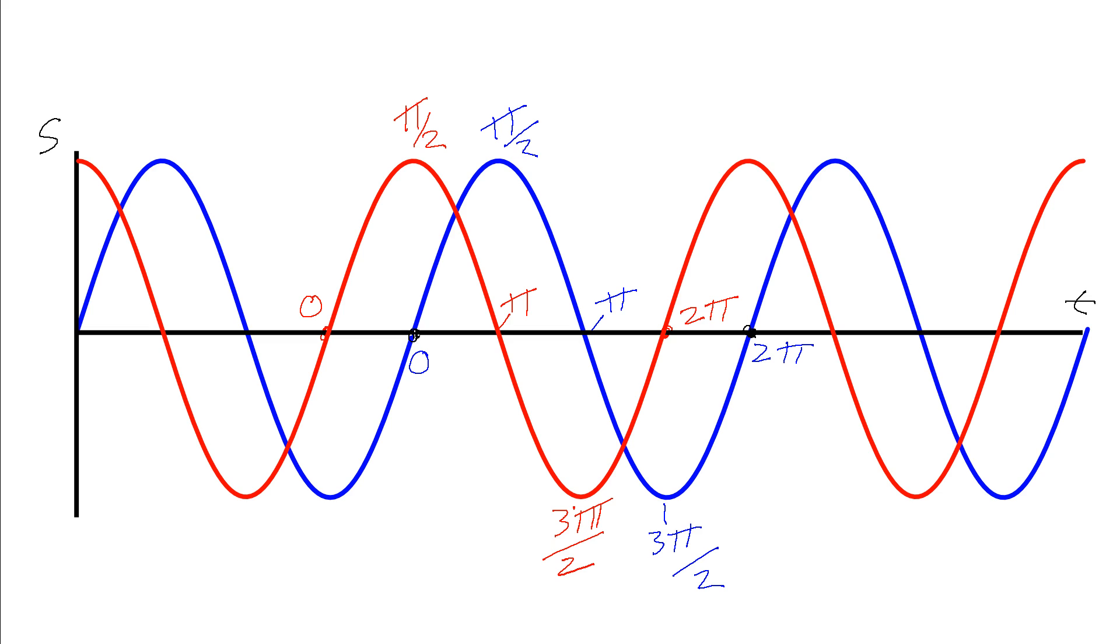And so we can see where the blue wave is at 0 phase, the red wave is at π/2 phase. Where the blue wave is at π, the red wave is at 3π/2. And so we can describe this offsetting between these two waves as a phase difference. What's the difference in phase at any given point? And so we can see that throughout this we've got a difference of π/2 in the phase.